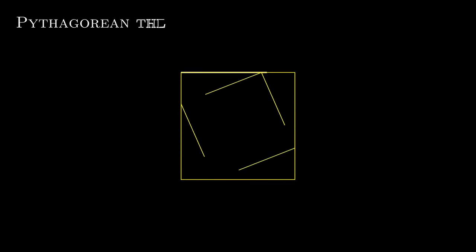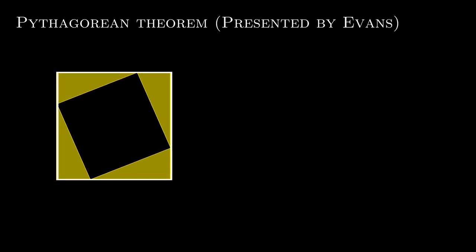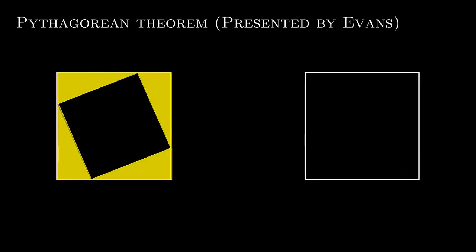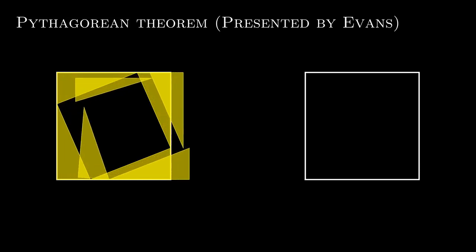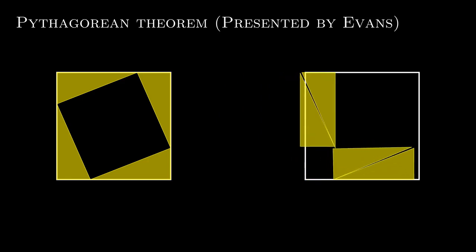The Pythagoras theorem is a relation among the three sides of a right angled triangle. It says that the area of the square whose side is the hypotenuse should be equal to the sum of the areas of the two squares formed on the other sides. In this case, the area of the square on the left, which is c squared, should be equal to the sum of the areas of a squared plus b squared.